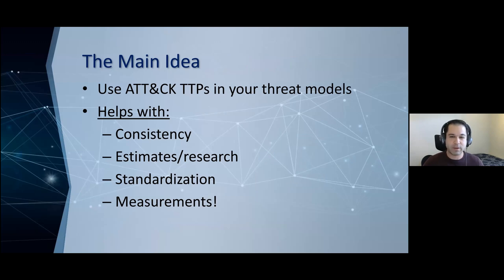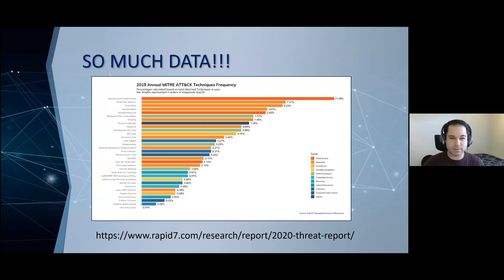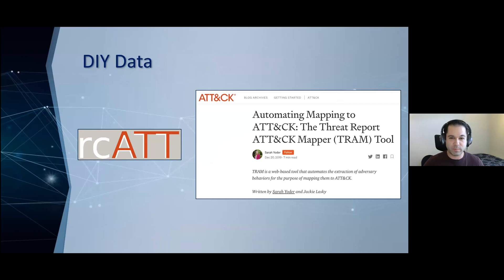So how do we get started? One of the things that's very hard to do with threat models is get those measurements for likelihood and impact. Luckily, when using ATT&CK, a whole world of data opens up. One example is from people who have measured it already, such as the folks at Rapid7 who published an ATT&CK frequency diagram. So if you're wondering what the likelihood of an attacker using PowerShell is, you have a number right there. If you have a unique scenario, there are tools such as TRAM from MITRE or RCAT, which allow you to pull ATT&CK techniques from intelligence reports and begin to collect measurements yourself.